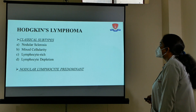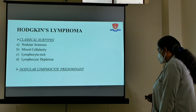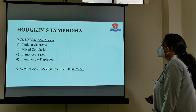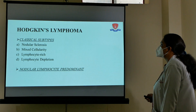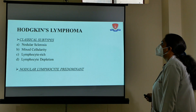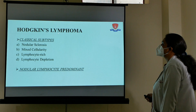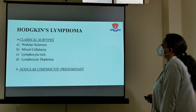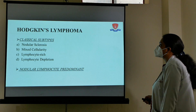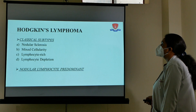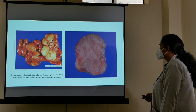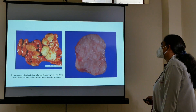Hodgkin's lymphoma is a distinct entity from non-Hodgkin's lymphoma because of its histogenesis — it develops from Reed-Sternberg (RS) cells, giving it a different histogenesis. It is divided into two subtypes: classical Hodgkin's lymphoma and nodular lymphocyte-predominant Hodgkin's lymphoma. Classical Hodgkin's lymphoma is further divided into four subtypes.